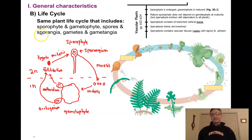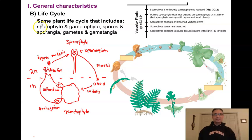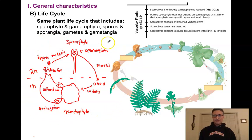Our second general characteristic is the life cycle. As emphasized throughout our lectures, all plants have the same basic life cycle — that's not changing. But sometimes the way structures look in this life cycle can change. I've put my diagram of the plant life cycle next to an example of the life cycle of a seedless vascular plant — specifically, this is an example of a fern life cycle.